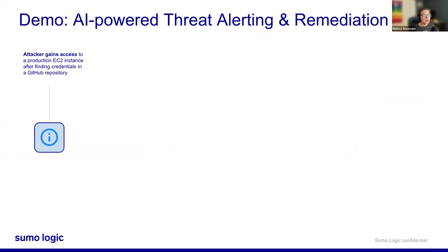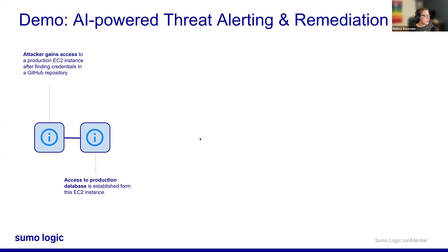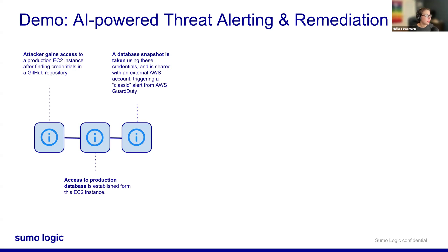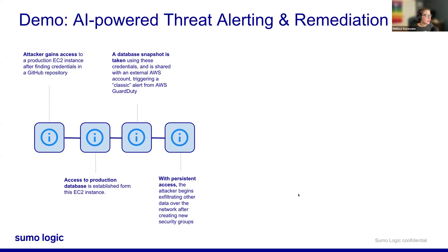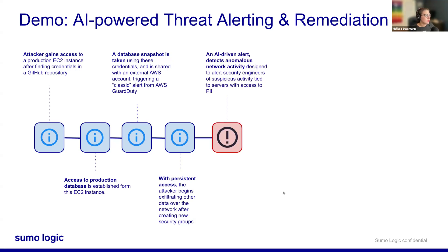Now we're getting into the AI-driven alerting demo. This demo goes into an investigation around an exfiltration. First, the attacker gains access to a production EC2 instance after finding credentials in a GitHub repository. Next, they get access to the production database established from this EC2 instance. Then a database snapshot is taken using these credentials and shared with an external AWS account, triggering a classic alert from AWS GuardDuty.